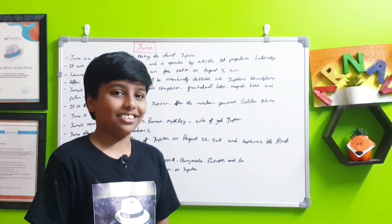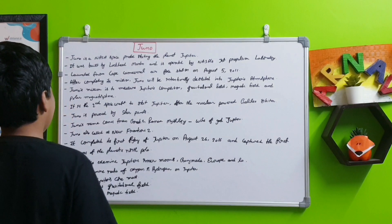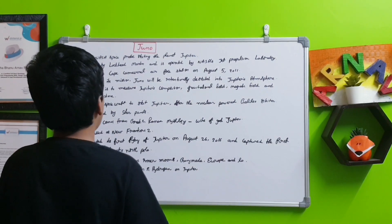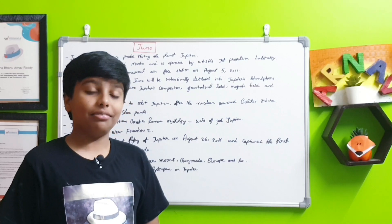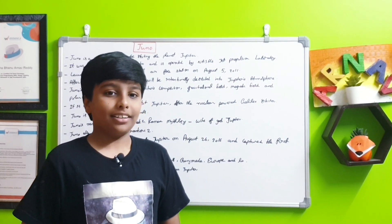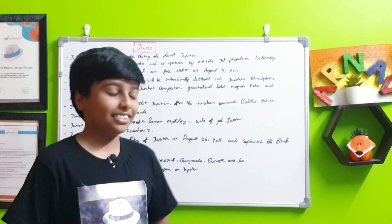But it is in space. There is no pollution in space. Juno's name comes from Greek and Roman mythology. Juno in Roman mythology is the wife of Jupiter, the god Jupiter.